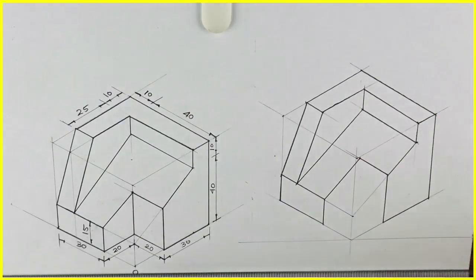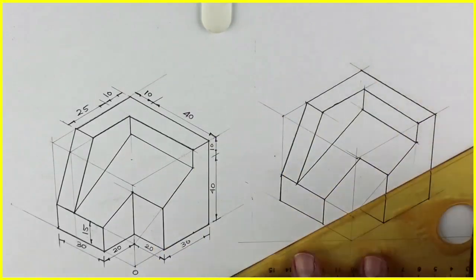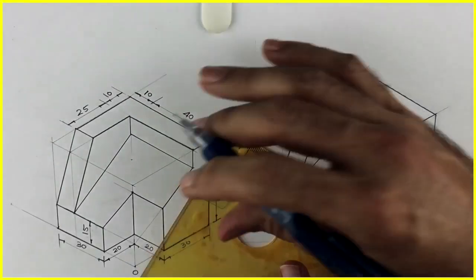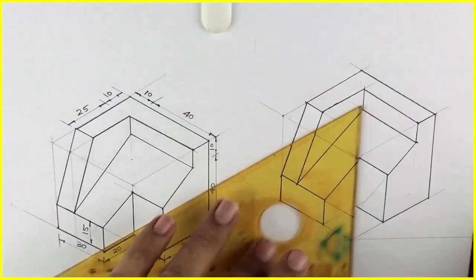Now to draw the lower portion, we can draw 30-degree angles on both sides. See this. And we'll draw a vertical line.